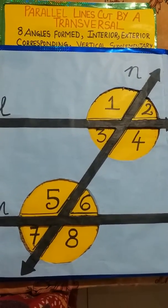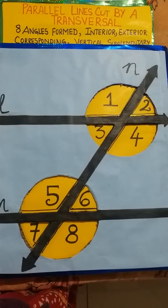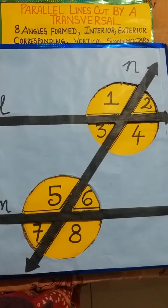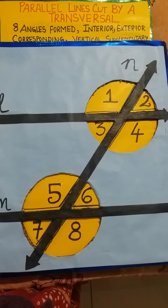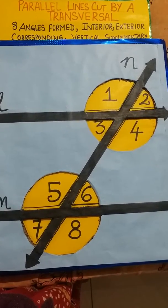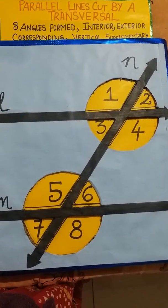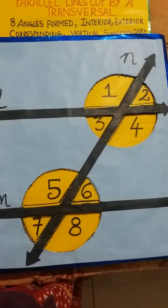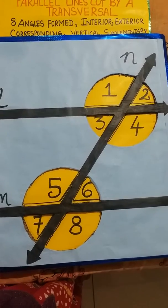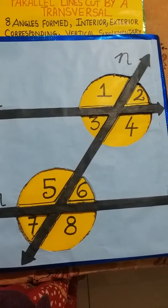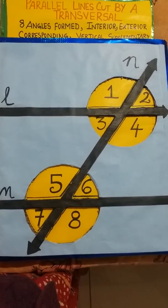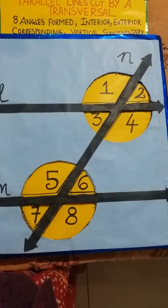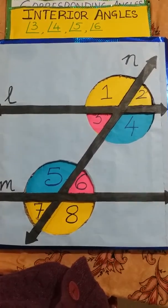When parallel lines are cut by a transversal line, 8 angles are formed. Interior, exterior, corresponding, vertical, and supplementary angles will be formed. Using this model it will be easily understood by students. We can see a total of 8 angles: 1, 2, 3, 4, 5, 6, 7, and 8. Here, m and l are the parallel lines and n is the transversal line.